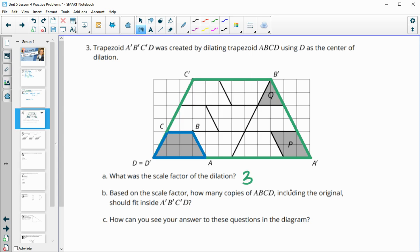Based on the scale factor, how many copies of ABCD, including the original, should fit inside? So this is talking area. So this is going to be the scale factor squared amount of times, so nine times.